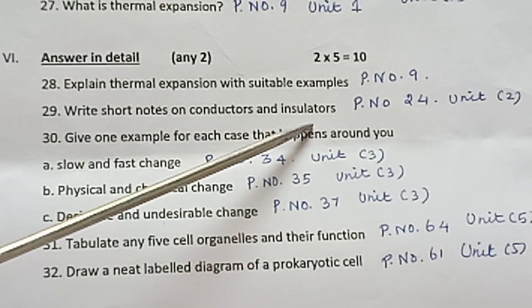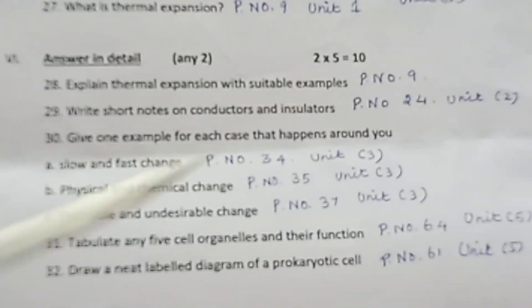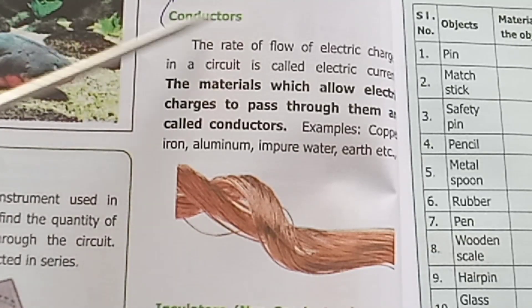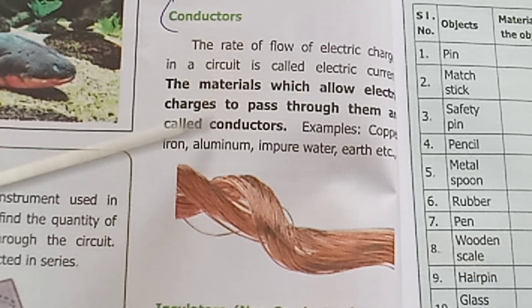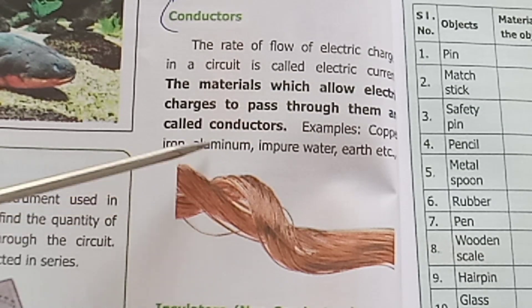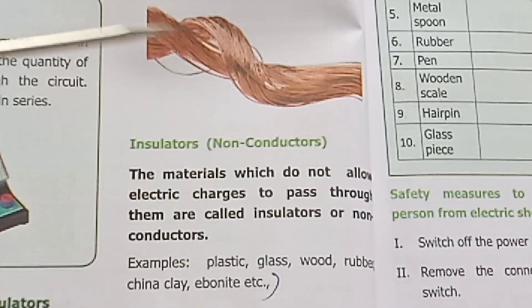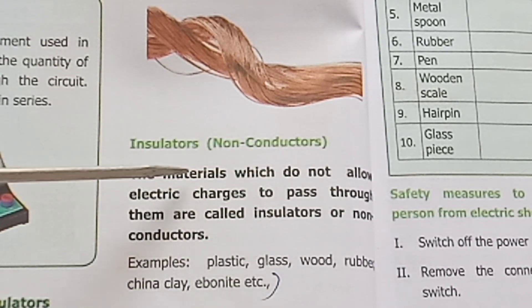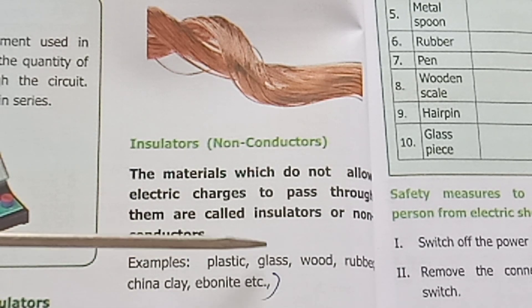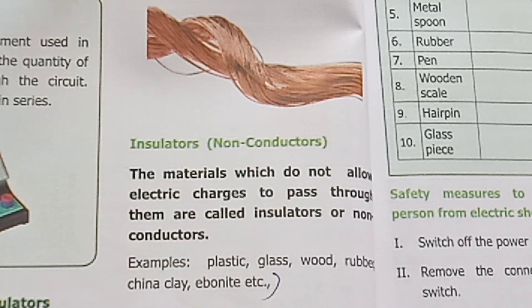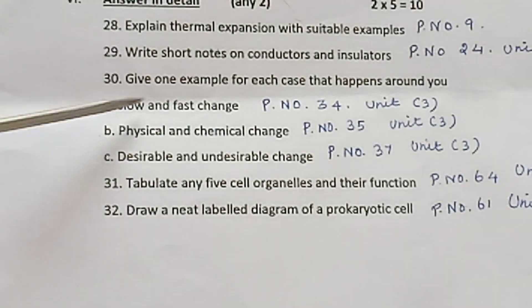Question 29: Write short notes on conductors and insulators. Refer to page number 24, Unit 2. Conductors are materials which allow electricity to pass through them. Examples: copper, iron, aluminium. Insulators do not allow electricity to pass through them. Examples: plastic, glass.